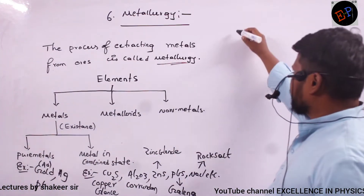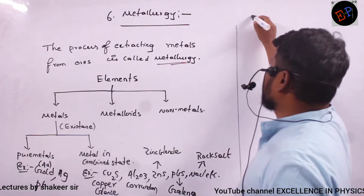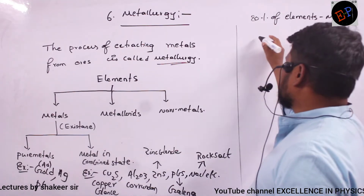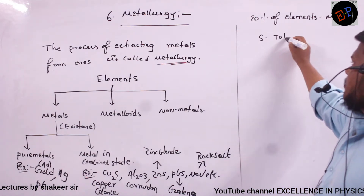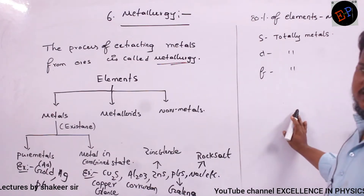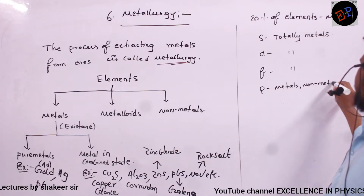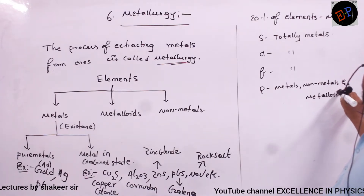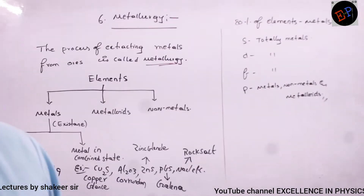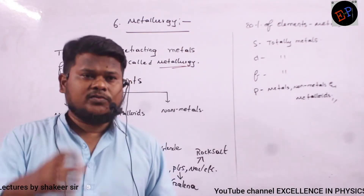Out of all elements in the periodic table, 80% of them are metals. The S block is totally made up of metals, the D block also consists of metals, and the F block also consists of metals. Only in the P block do you find metals, non-metals, and metalloids. Therefore, to obtain metals not existing in natural form, we need to do some extraction process, which is called metallurgy.